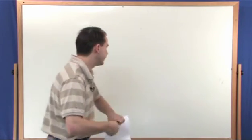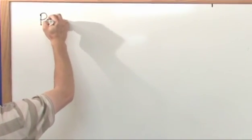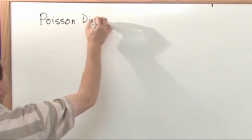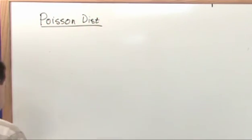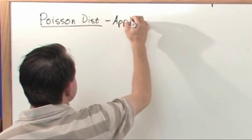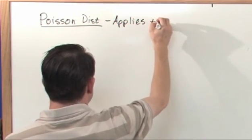So let's go ahead and write it down and see what it's all about. The Poisson distribution - and I'm really going to write down a lot of what I just said, just to make it clear - it applies to occurrences.